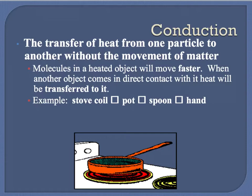The first method is called conduction, and this is known as the transfer of heat from one particle to another without the movement of matter in between. That basically means something has to touch something else in order to be heated up. Conduction has a D in it, and I remember conduction has to do with direct contact, which also has the beginning letter D.